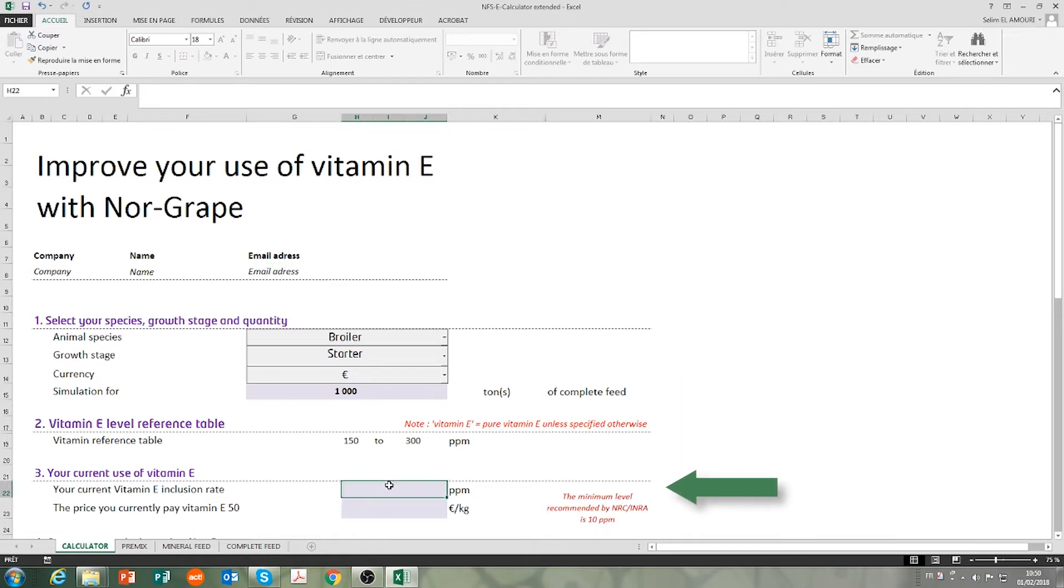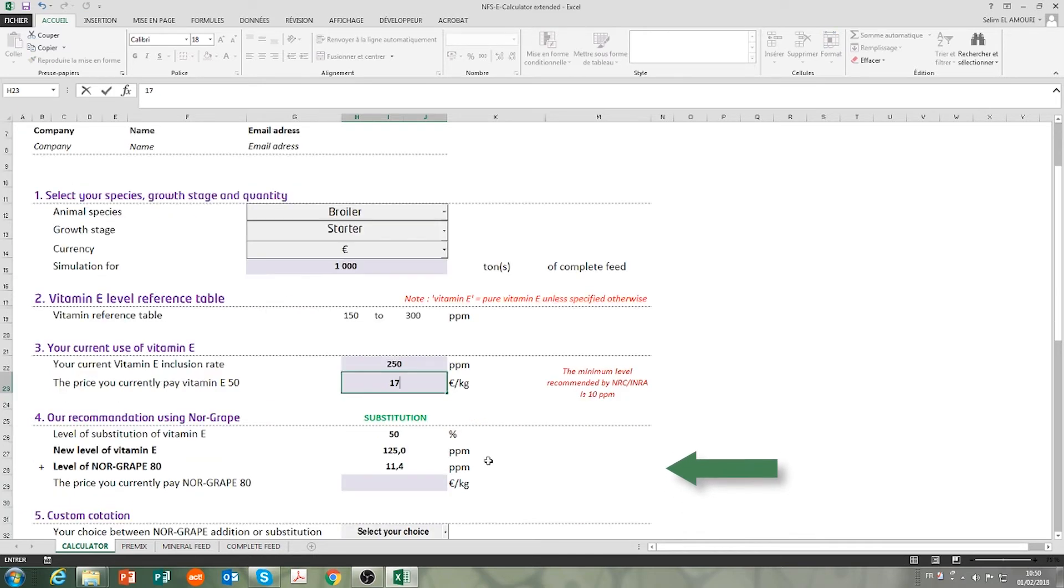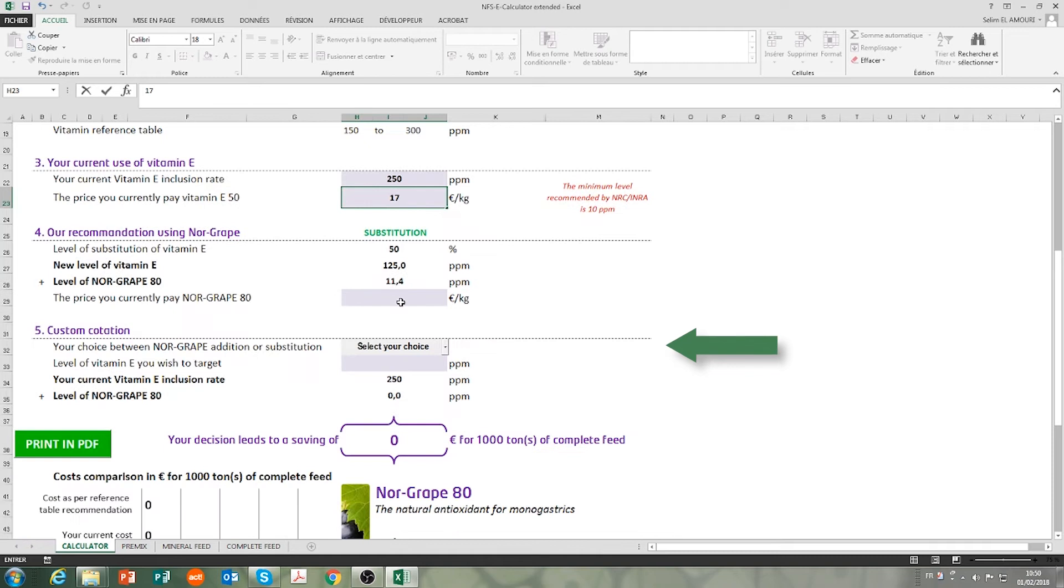Your current vitamin E inclusion rate is 250 ppm for a price of 17 euros per kilo. We recommend substituting 50% of the vitamin E by Norgrape at an estimated price of 130 euros per kilo.